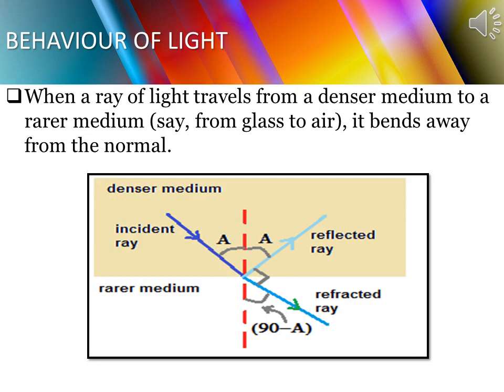When a ray of light enters from a denser medium to a rarer medium — that is, from glass to air — the ray bends away from the normal. So the angle of refraction will not be equal to the angle of incidence; it is going to be slightly more than the angle of incidence.